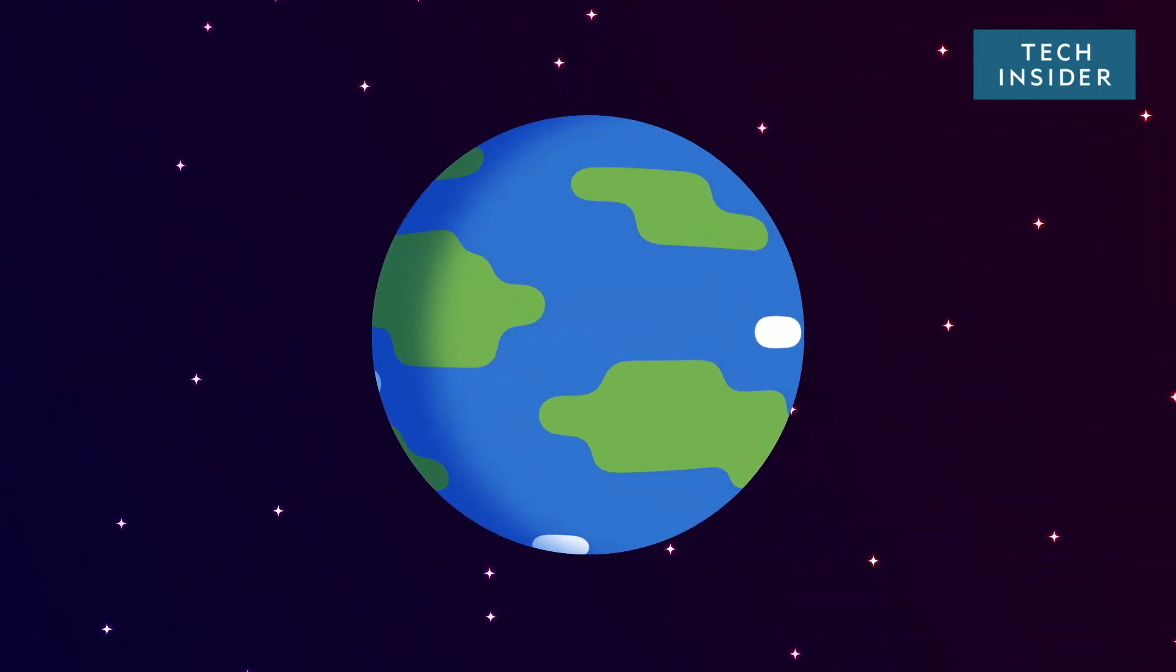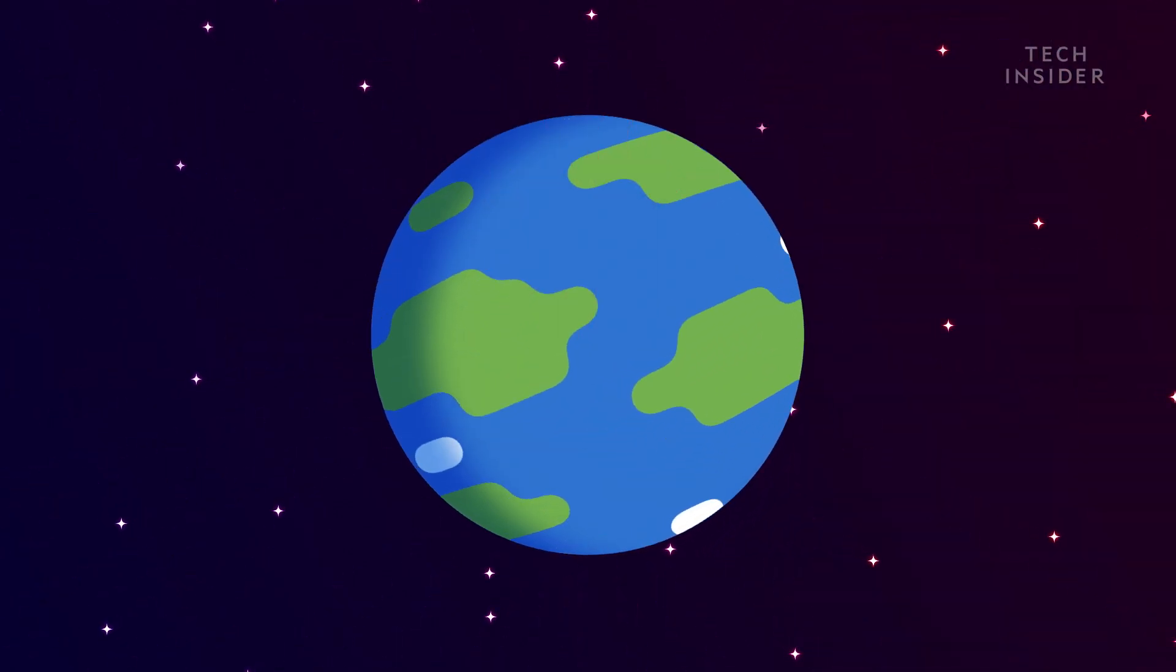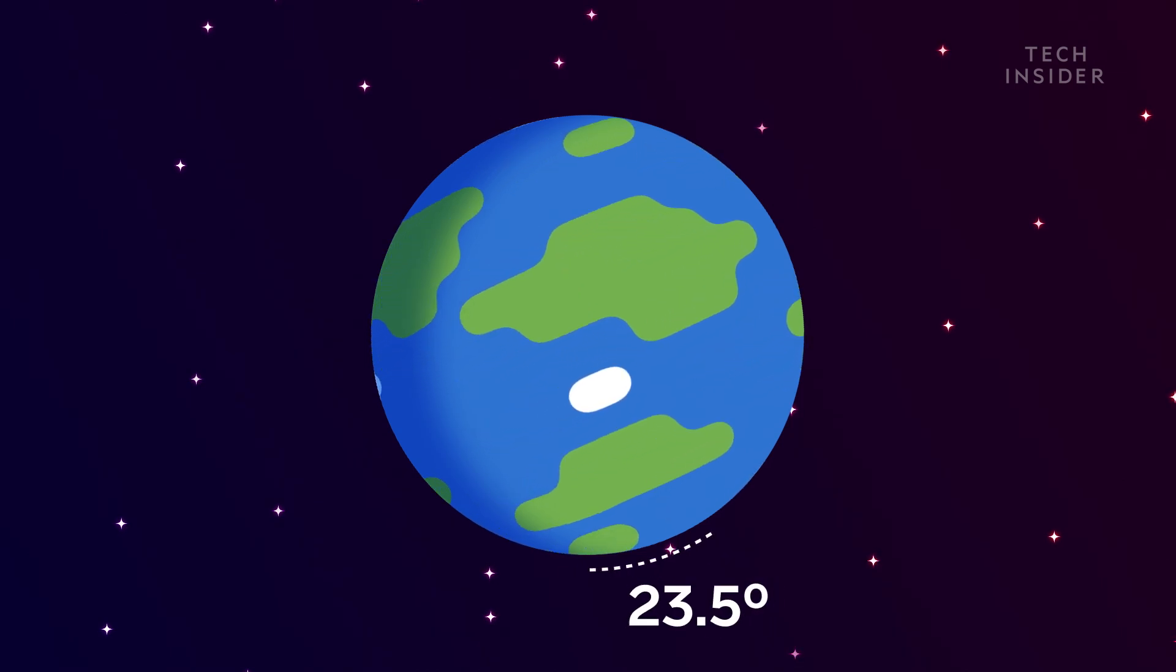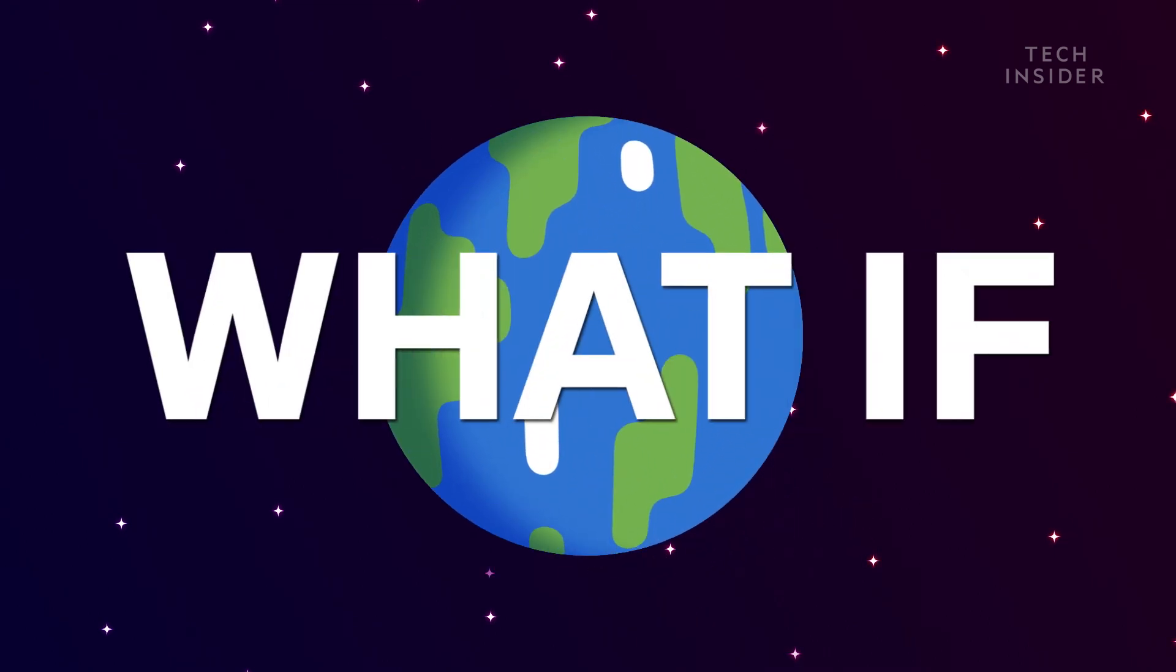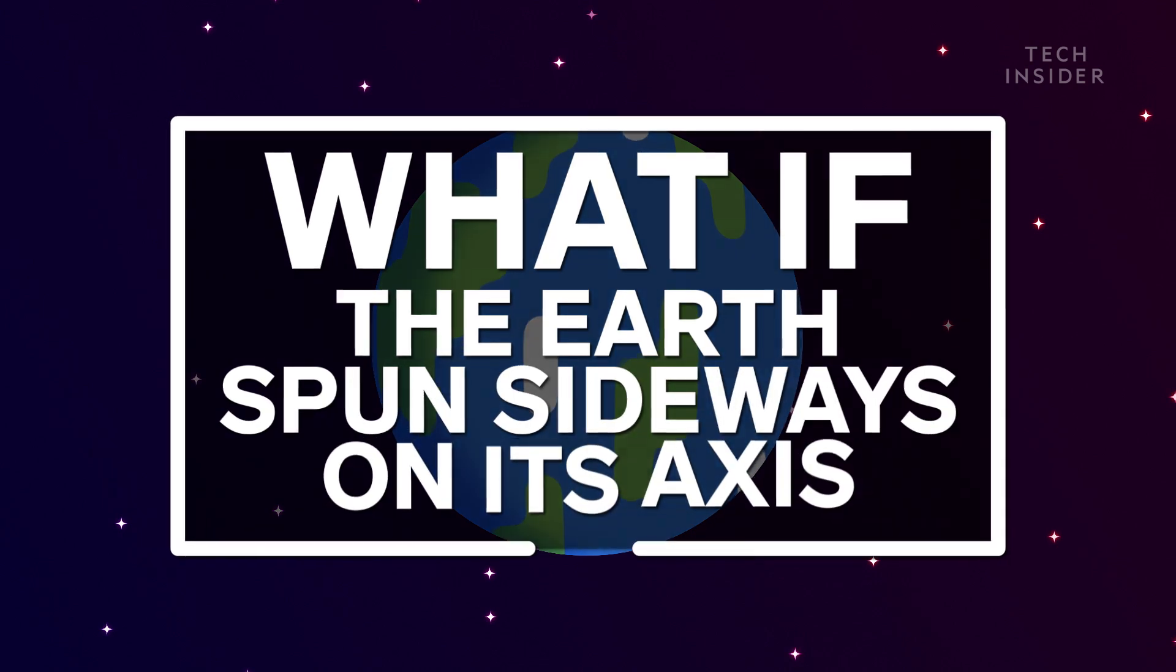Early in the history of our solar system, something mysteriously knocked Earth slightly off its axis. So today, we tilt at 23.5 degrees. But what would happen if we tilted even more? What if Earth spun sideways on its axis?